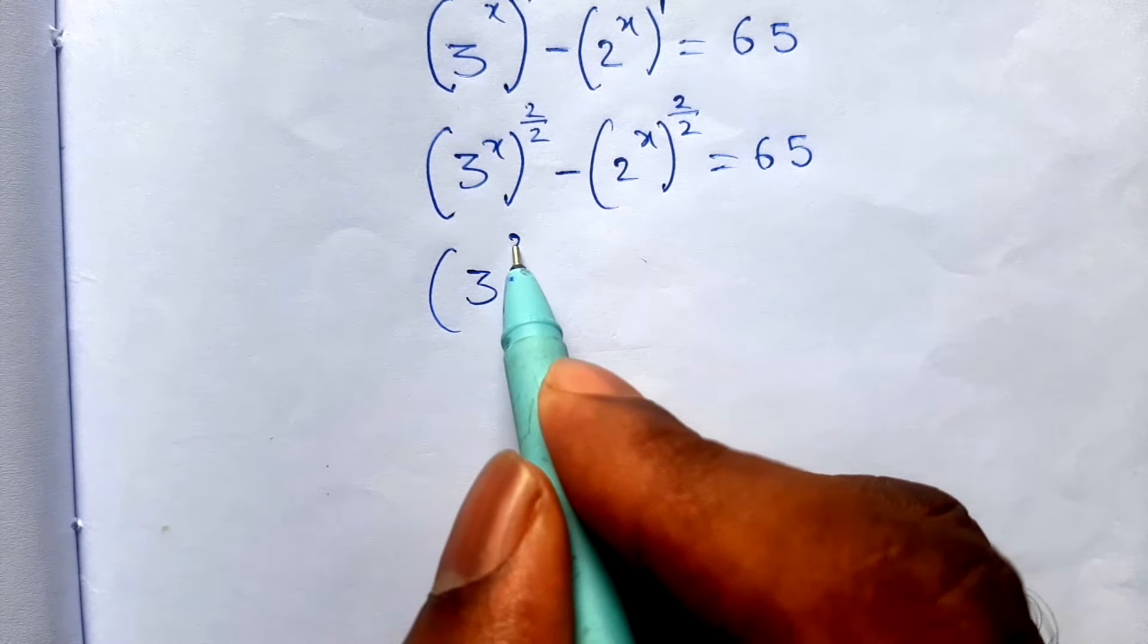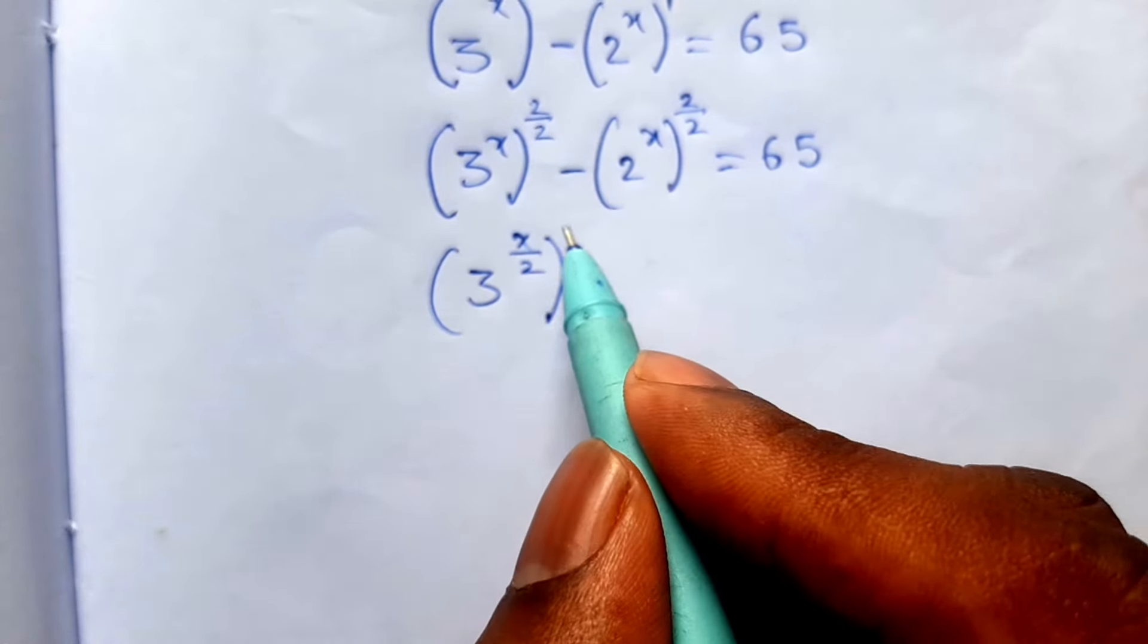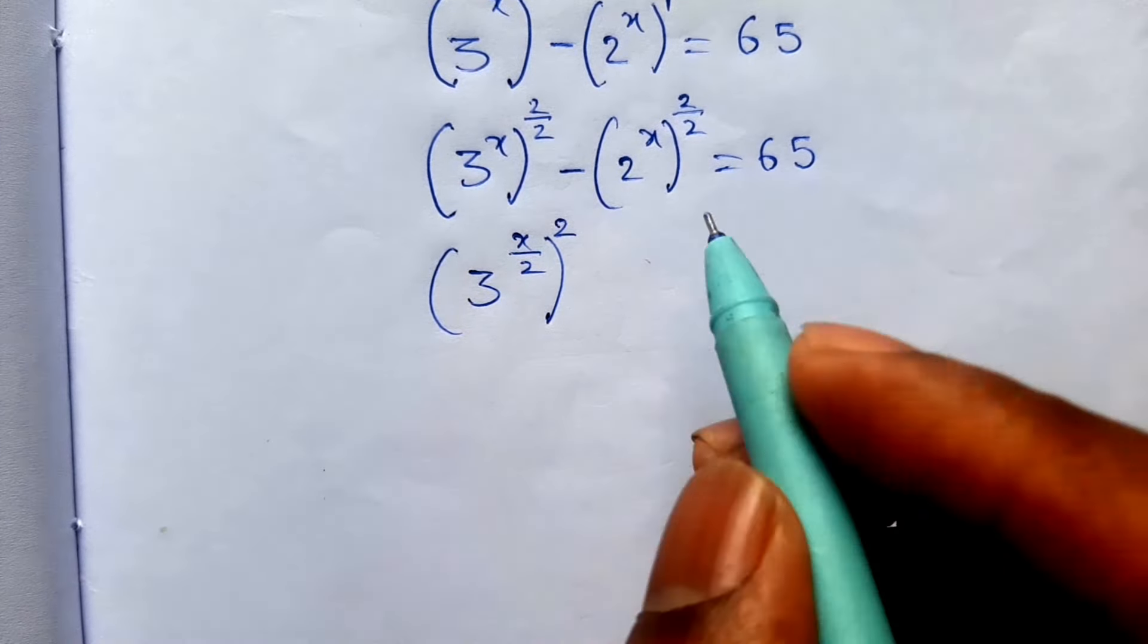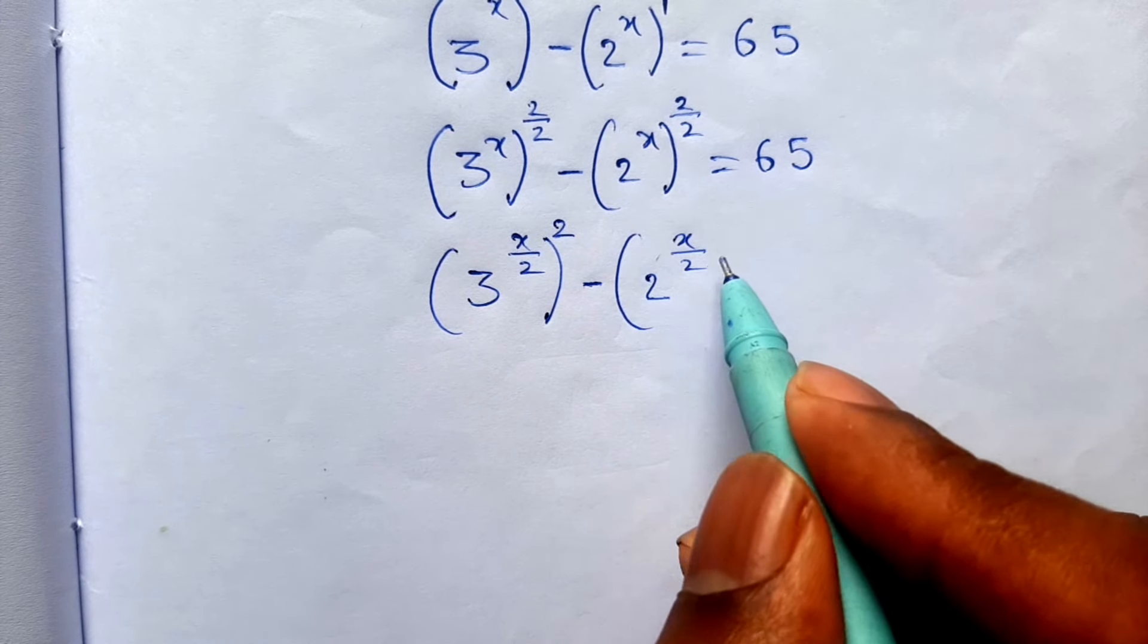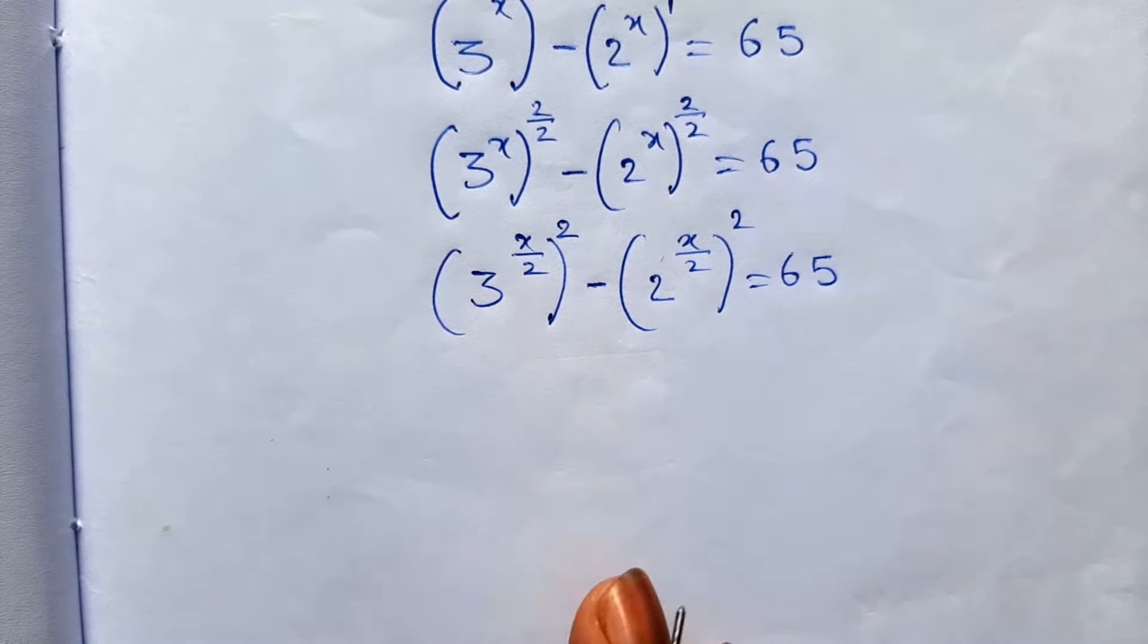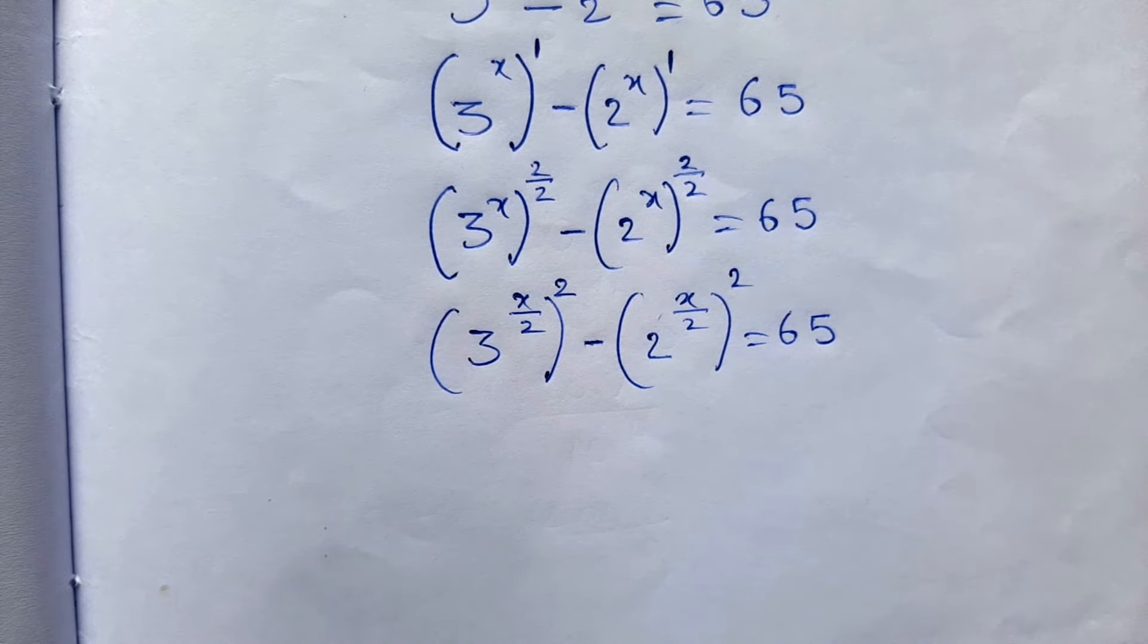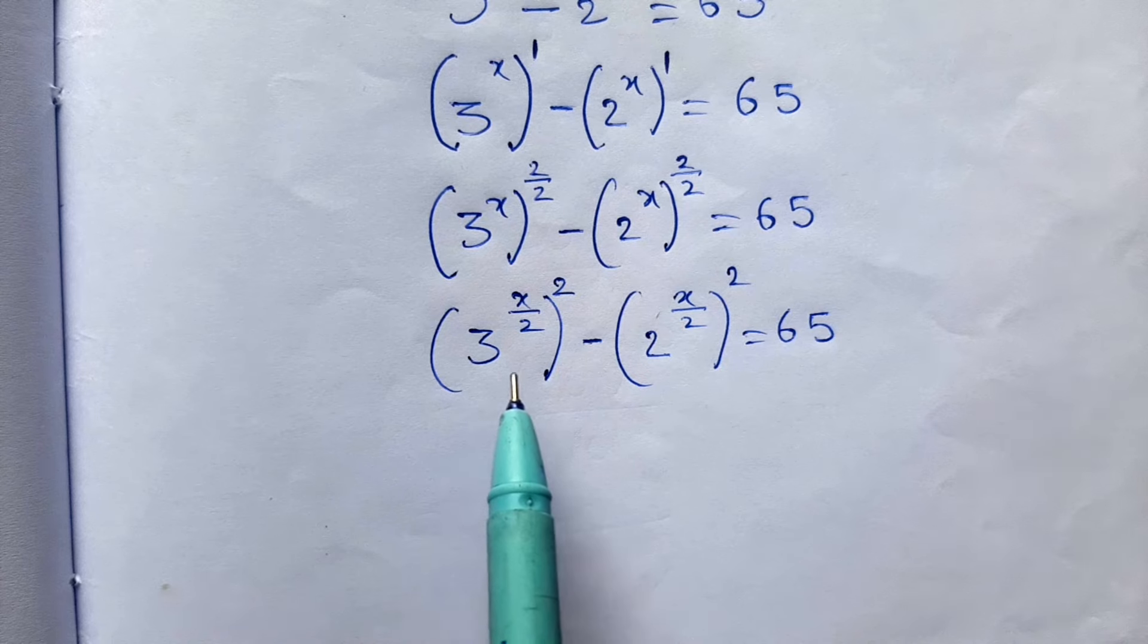After that, 3 to the power x by 2, remaining power 2 is right again, minus here also 2 to the power x by 2 whole square is equal to 65. Do you understand this step? This one I am writing like this.